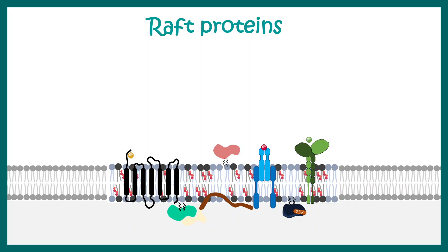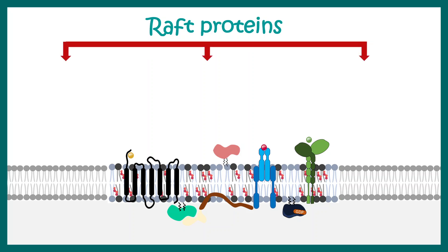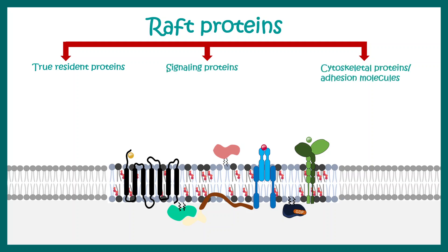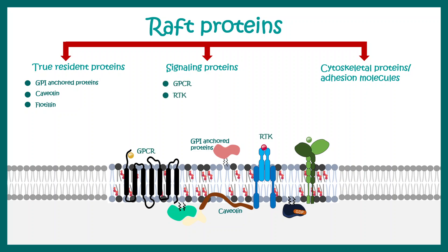Now let's get a better sense of lipid raft proteins. There are three categories: true resident proteins, signaling receptor proteins, and cytoskeletal elements. The true resident proteins include GPI-anchored proteins and caveolin. The signaling receptor proteins include G protein-coupled receptors and receptor tyrosine kinases — many receptors are associated with lipid rafts and form a receptor cluster complex. Cytoskeletal proteins such as actin and myosin can also be associated with lipid rafts.